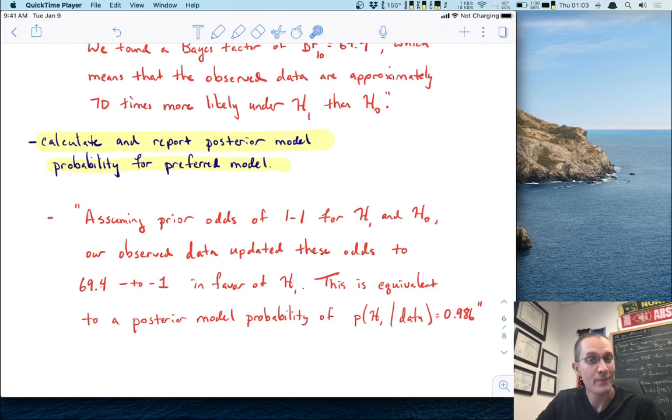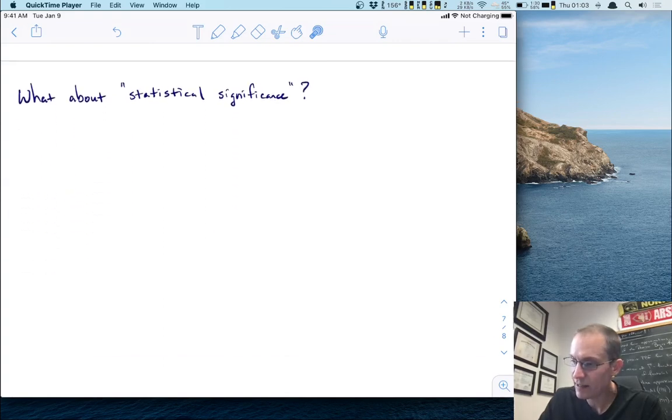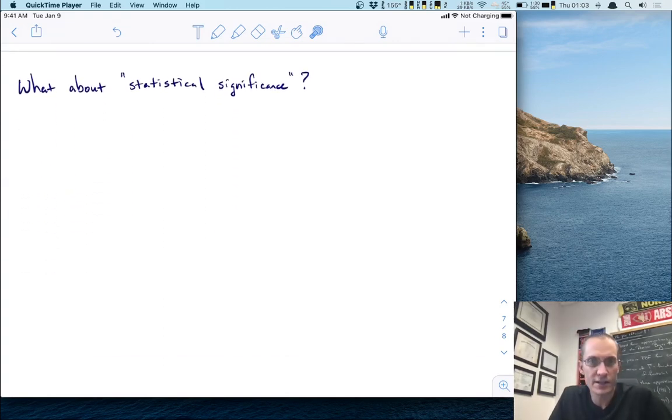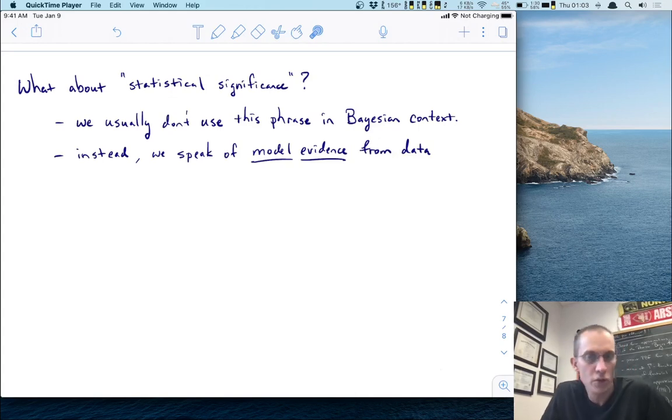And that's it for that. The last thing that I might mention before ending this lecture is what about statistical significance? At this point in your career, you've probably been taught to say things about statistical significance. Do you need to do that here? And the answer is no. We usually don't use this phrase in a Bayesian context. I think the reason for that is not because the word significant is bad, but because it's been used so much as part of the frequentist paradigm that it really becomes easy to mix things up. And so I don't recommend using it at all. What I would recommend instead is that we speak of model evidence from the data. Make it a Bayesian concept that you are talking about here.